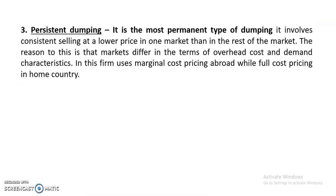Another type of dumping is persistent dumping. As the name suggests, persistent means permanent in nature — it is the most permanent type of dumping. It involves consistently selling at a lower price in one market than in the rest of the markets. The reason is that markets differ in terms of overhead cost and demand characteristics. Firms use marginal cost pricing abroad while using full cost pricing in the home country.